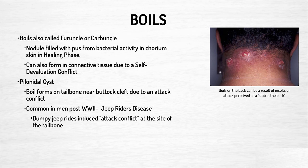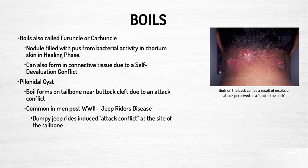Boils — also called a furuncle or carbuncle — are nodules filled with pus from bacterial activity in the corium skin during the healing phase. Boils can also form in connective tissue due to a self-devaluation conflict. Boils on the back of the neck or on a person's back can be as a result of someone perceiving somebody stabbed them in the back or said terrible things about them behind their back — and that's how their body manifests that protective capacity.